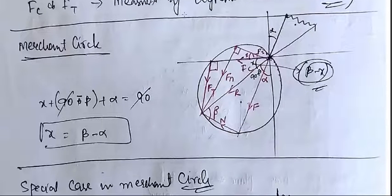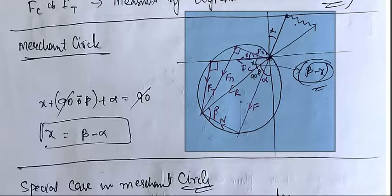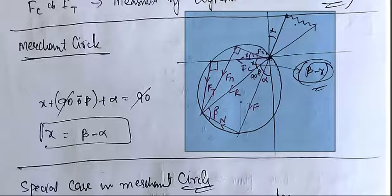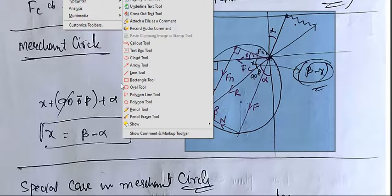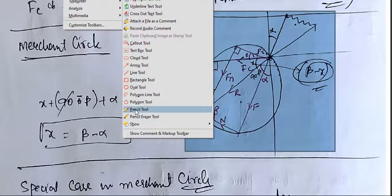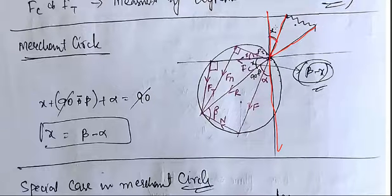I have told you that we have the different forces. If we focus on this Merchant Circle — this is our tool. This is the cutting edge here. With respect to the normal, it is making this angle, and we call this the orthogonal rake angle.